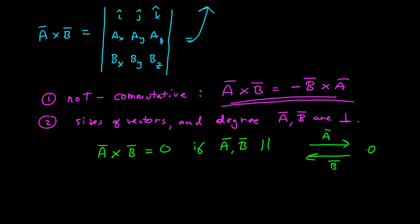then the theta between them, tail to tail, is zero or 180 degrees. And sine of zero and 180 is zero, so the cross product is zero.